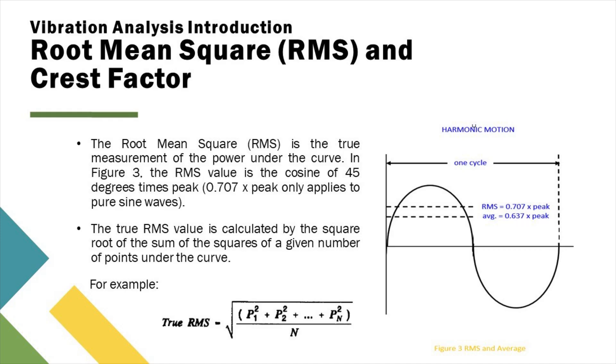The root mean square, RMS, is the true measurement of the power under the curve. In figure 3, the RMS value is the cosine of 45 degrees times peak. 0.707 multiplied by peak only applies to pure sine waves.